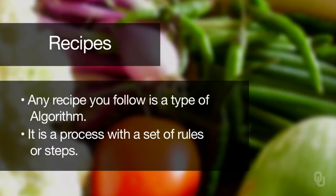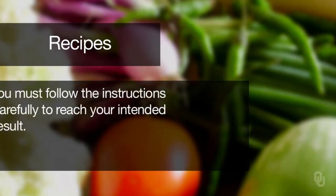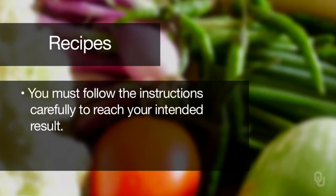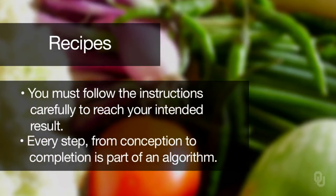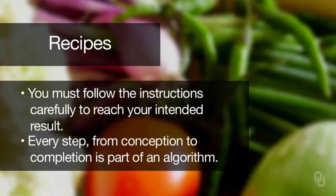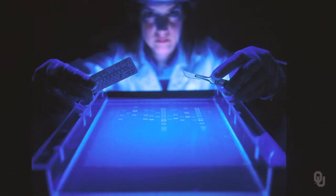It has a set of steps — put half a cup of this together with a quarter cup of this and a teaspoon of this, and stir them all together in a specific way, then put it in the oven at a specific temperature. Well, if you don't follow the process or the steps, then you don't get the result that you expect.